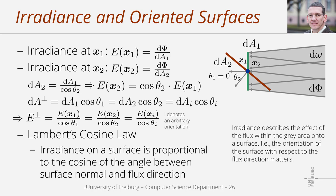The irradiance has its maximum if the surface patch is orthogonal to the flux direction. If the angle changes, the irradiance gets smaller. The respective relation between irradiance and angle θ is referred to as Lambert's cosine law, which states that the irradiance on a surface is proportional to the cosine of the angle between surface normal and flux direction. In summary, irradiance describes the effect of some flux onto a surface, and here the orientation of the surface to the flux direction matters.